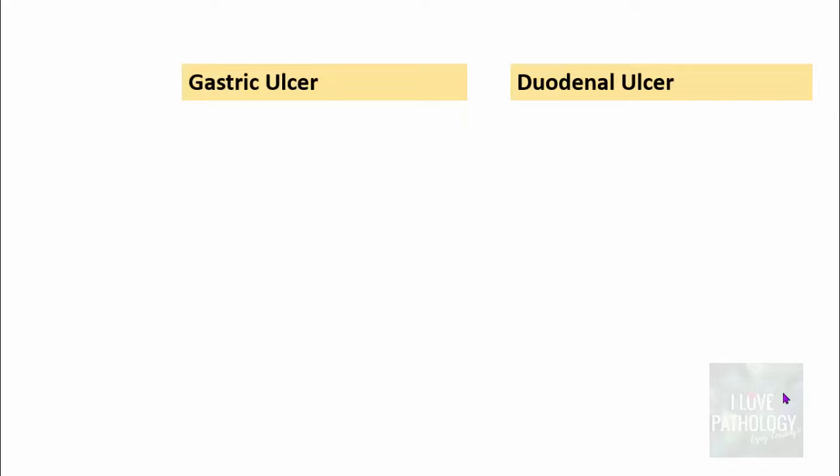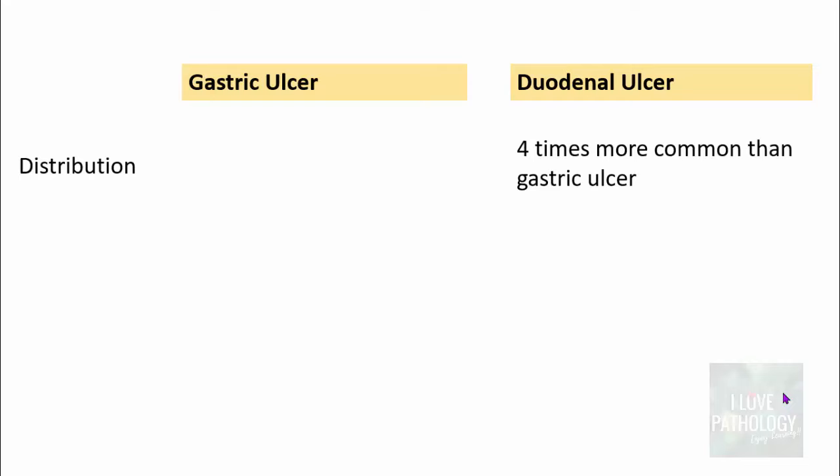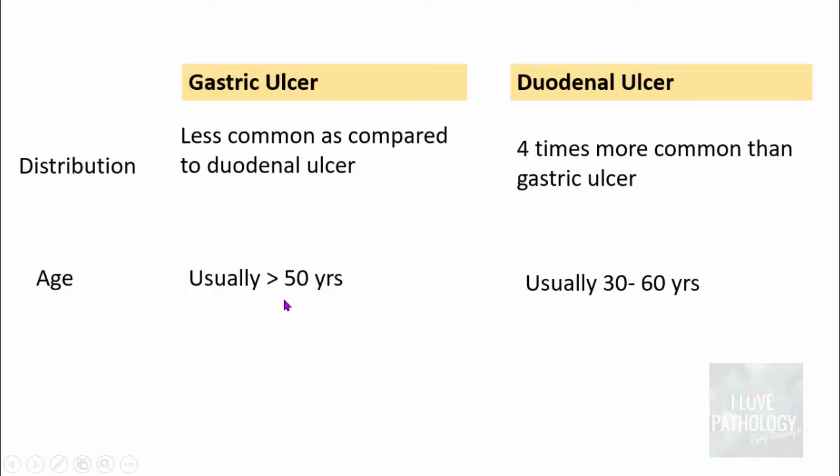The first difference is distribution. Duodenal ulcer is actually more common — around four times more common than gastric ulcer. Duodenal ulcers usually occur in the 30 to 60 years age group, whereas gastric ulcers are usually common in those more than 50 years. Females are more commonly affected by gastric ulcers, whereas duodenal ulcers are more commonly found in males.